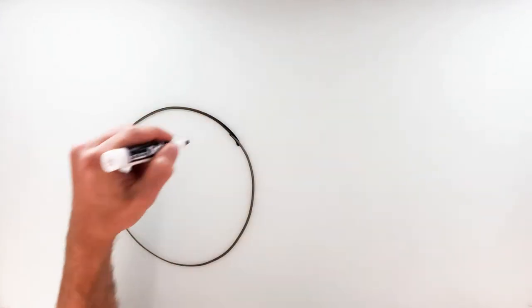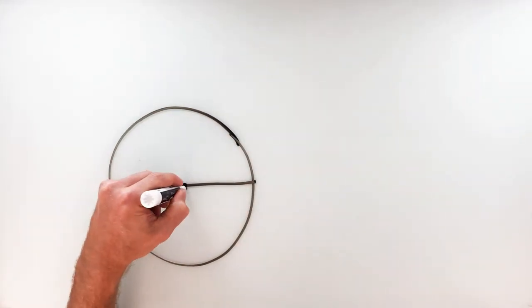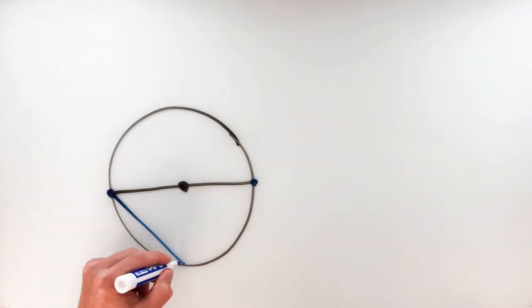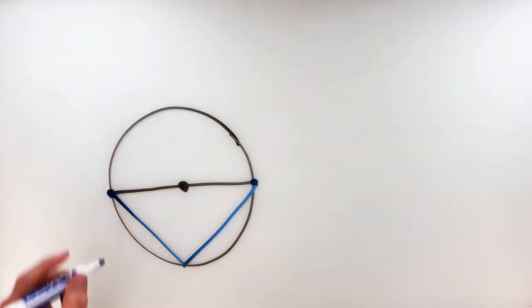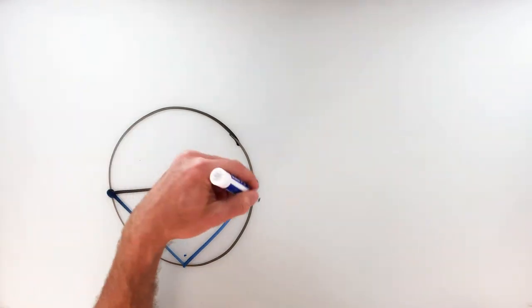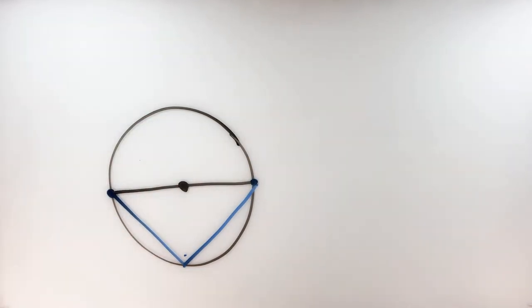The second corollary: if you have an angle inscribed in a semicircle — a semicircle being half the circle with a diameter — and the inscribed angle has endpoints at the ends of that diameter, then because half of a circle is 180 degrees, the inscribed angle must be half of 180, which is 90. So an inscribed angle inscribed in a semicircle is always going to be a right angle.